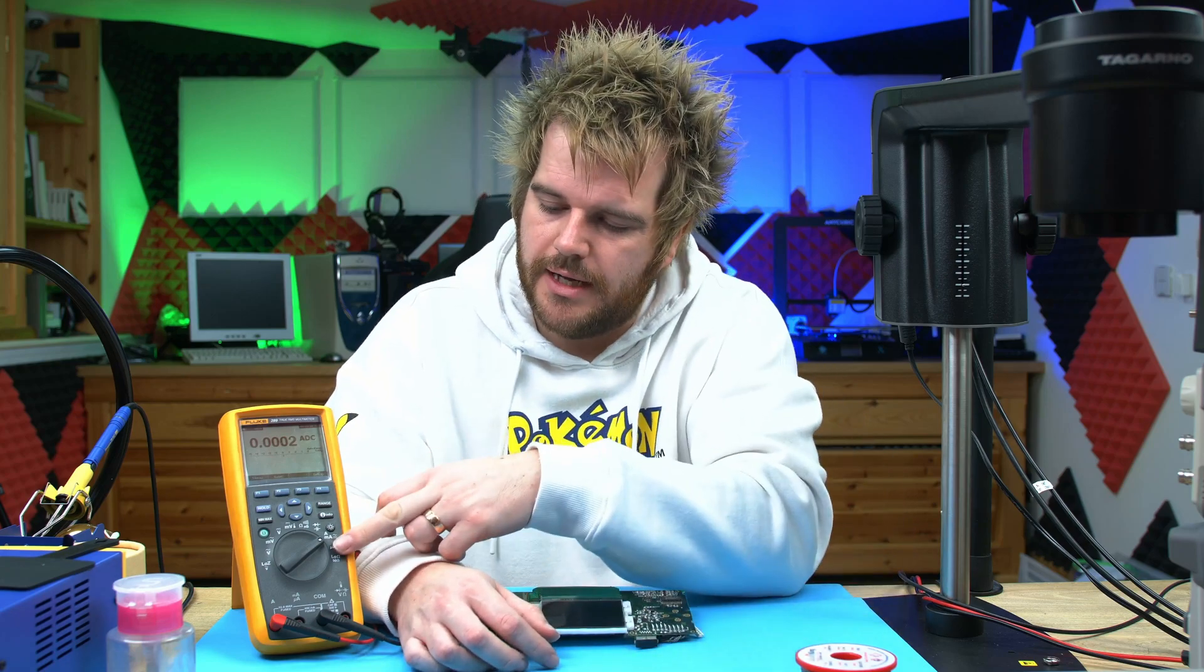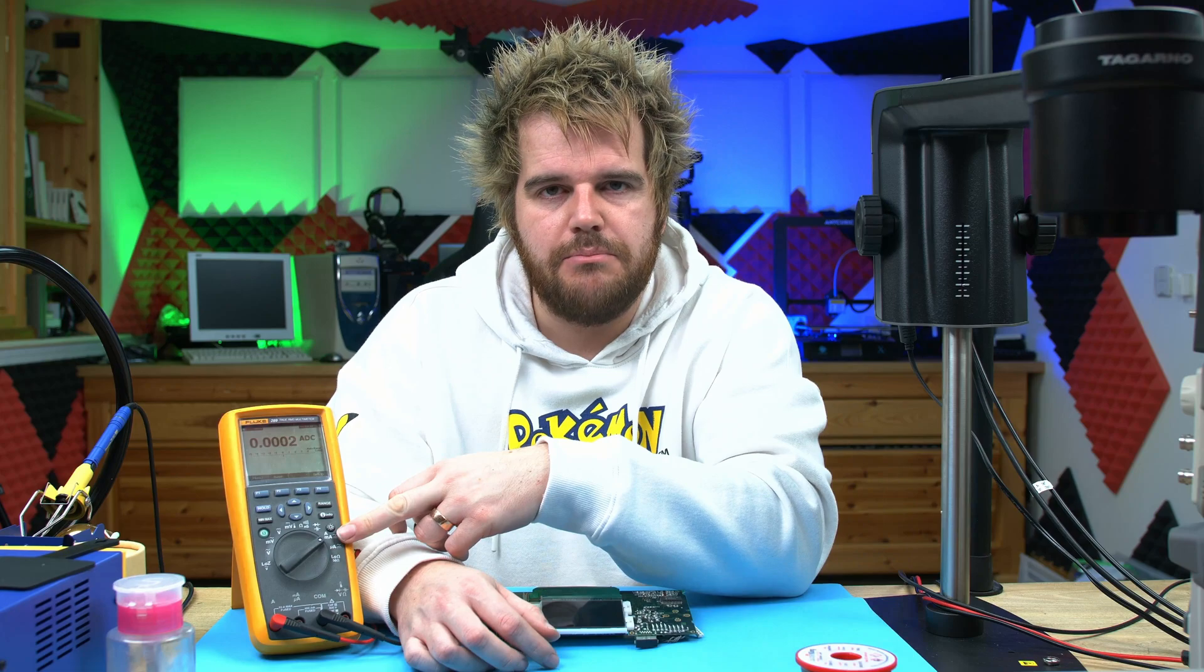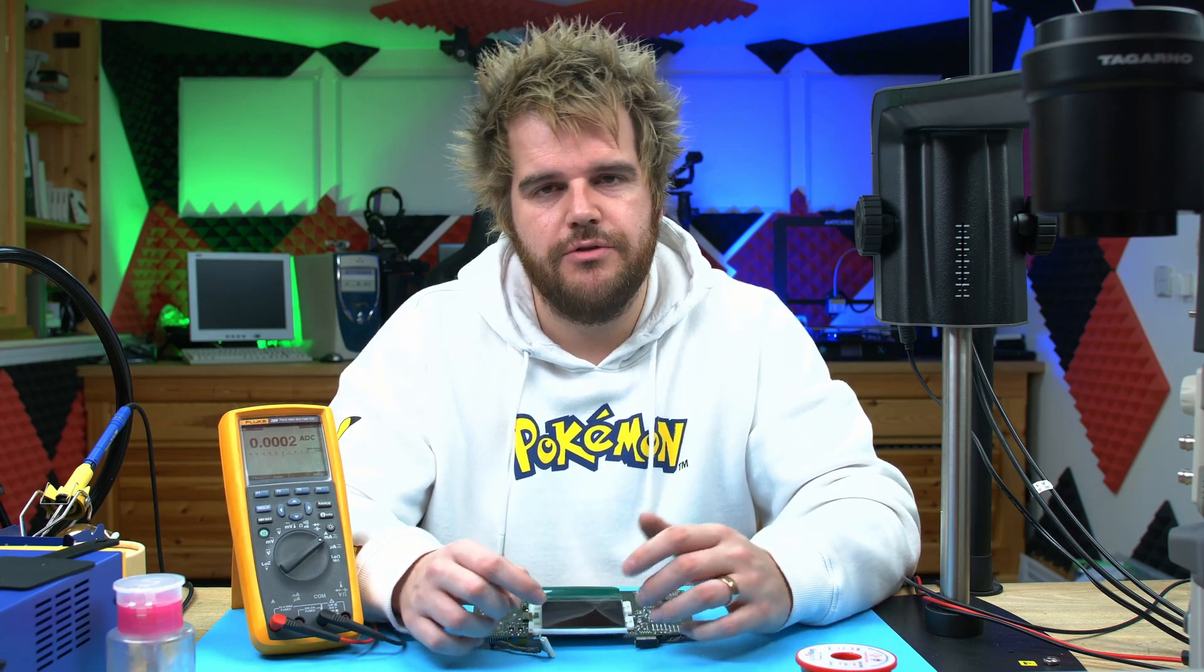So we've seen how to use resistance, continuity, and voltage on a multimeter. The last few things are to look at the amps and the diode modes. Let's first take a look at how to measure current in amps.